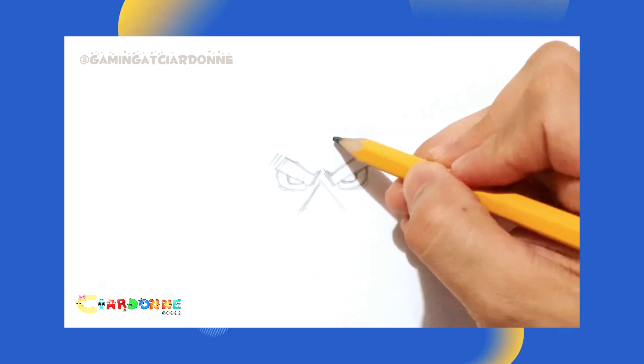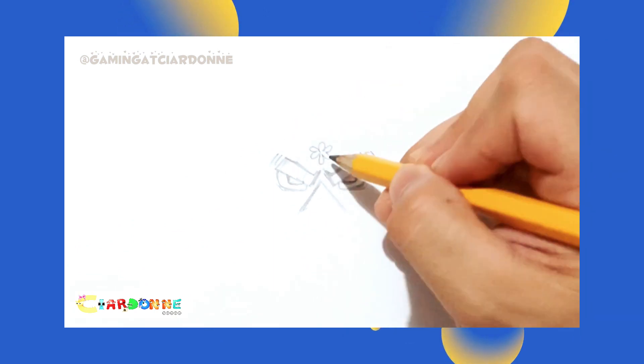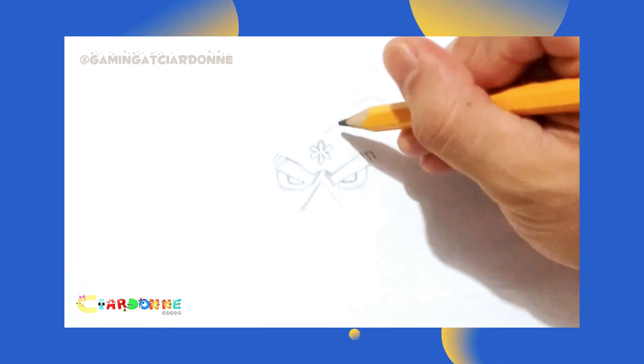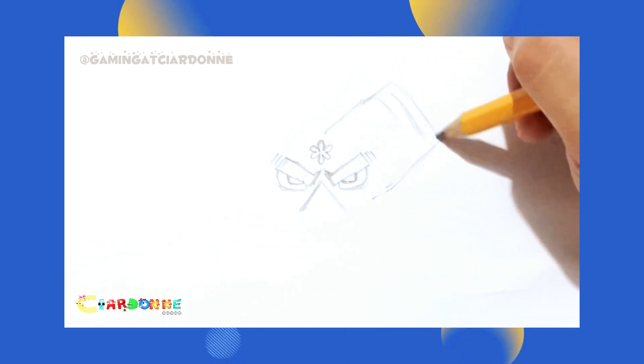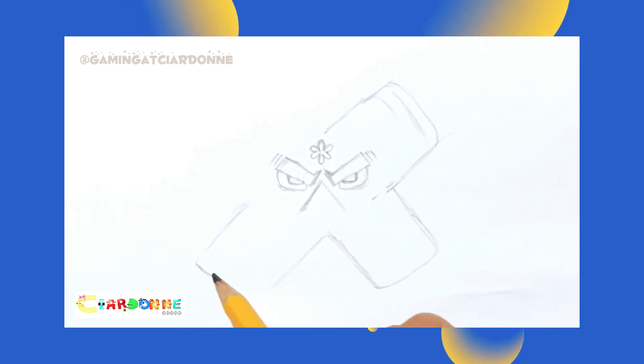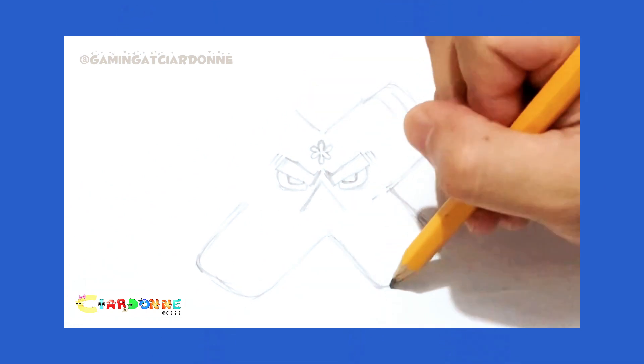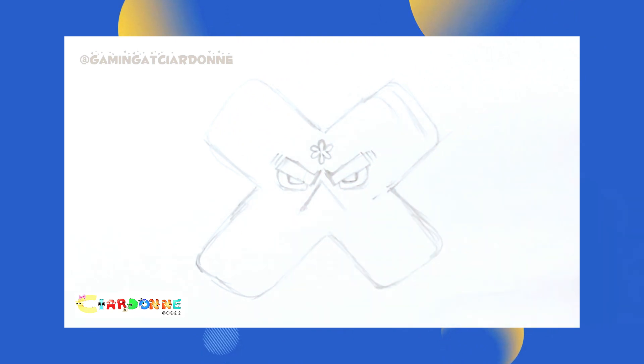Let's start at the very beginning. The origins of the letter X can be traced back to ancient times. Did you know that it was actually derived from the Phoenician letter Samic? Over centuries, this symbol has transformed and found its way into various alphabets, including the Greek, Latin, and English. It's incredible how a simple shape evolved to become an integral part of our language.